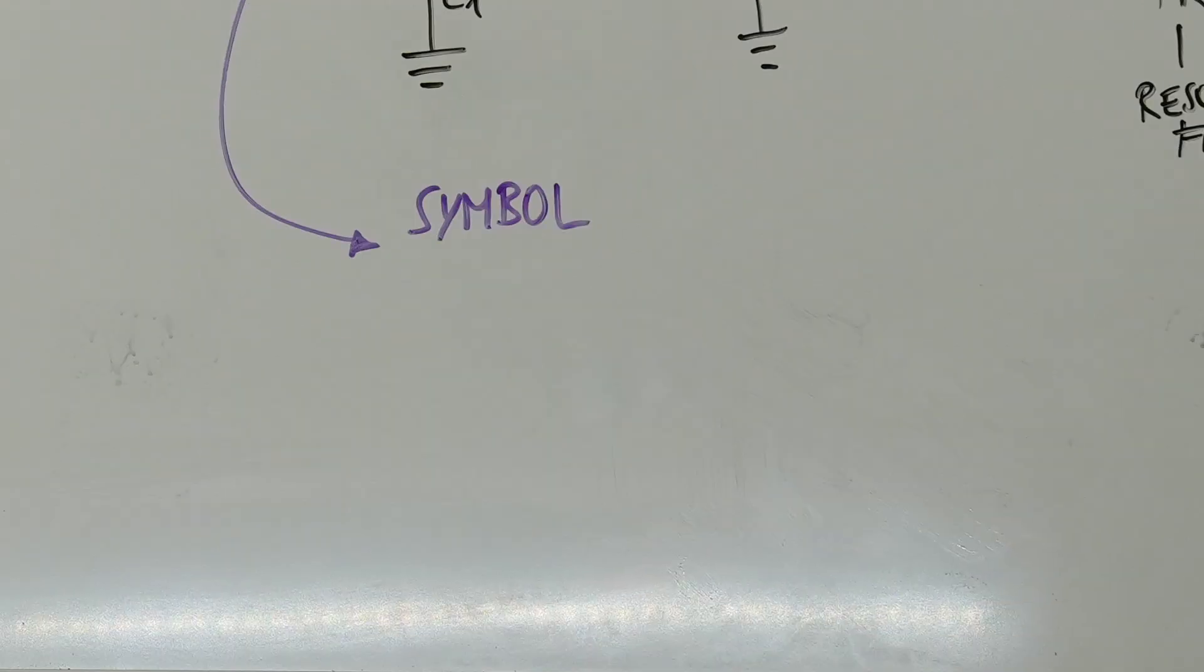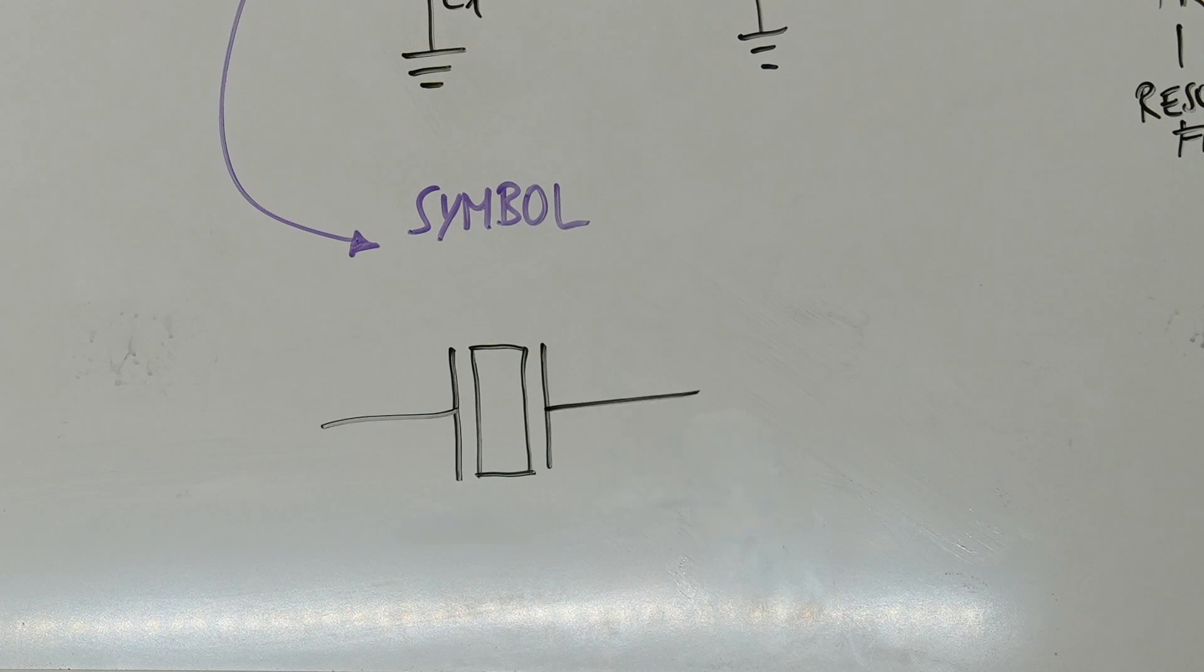The symbol for quartz crystal in circuit diagrams typically consists of a rectangle with two parallel vertical lines on each side. A horizontal line is connected to each of the lines representing the pins. The rectangle itself symbolizes the quartz crystal element.